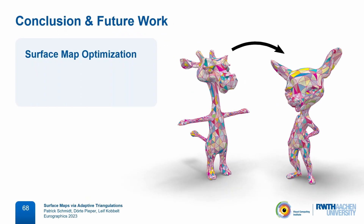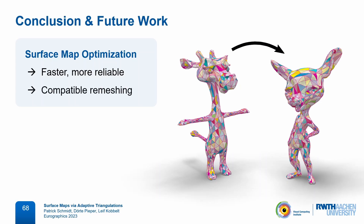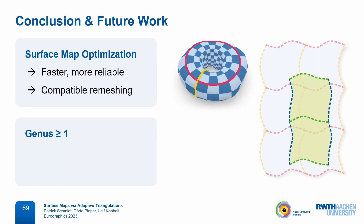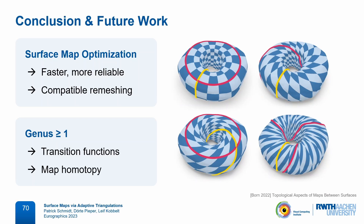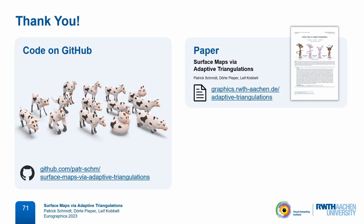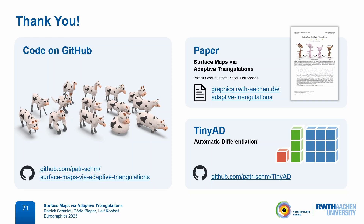In conclusion, we presented an algorithm that makes the optimization of bijective maps between surfaces faster, more reliable, and hopefully a bit more accessible. We also combined the disciplines of surface map optimization and compatible remeshing in a single formulation. Since we only covered the genus zero case, the obvious next step is to generalize to higher genus, for example via tilings of the plane or the hyperbolic plane — this comes with practical challenges such as robust handling of cuts and transition functions, as well as theoretical challenges like the choice of map homotopy classes. Finally, since the objective function is quite flexible, we are excited to see different variations explored in the future, and we have made our code available on GitHub.